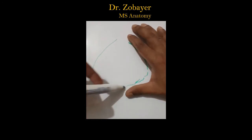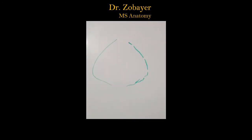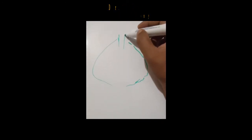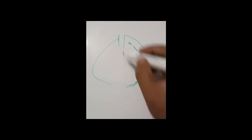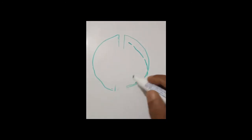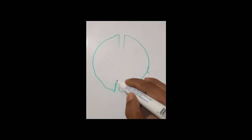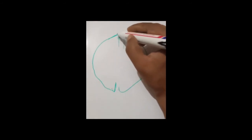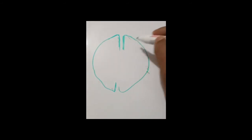Now we will draw the inferior surface like this. Here is the frontal pole, and here is the frontal pole of this side also. Now you have to draw...